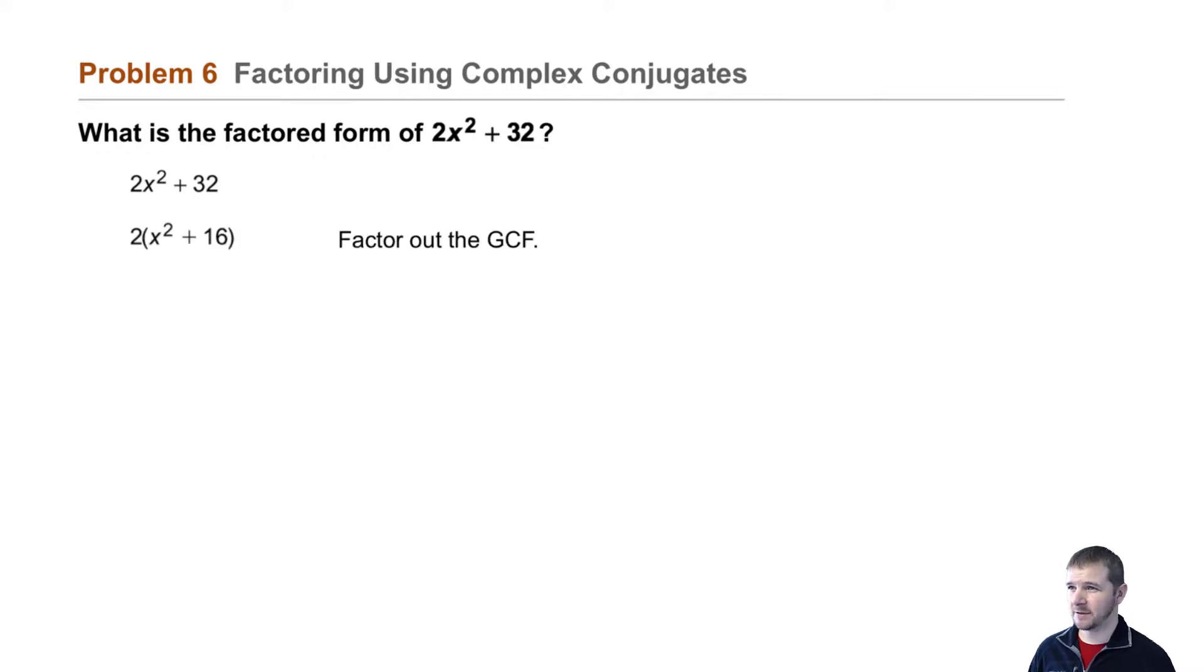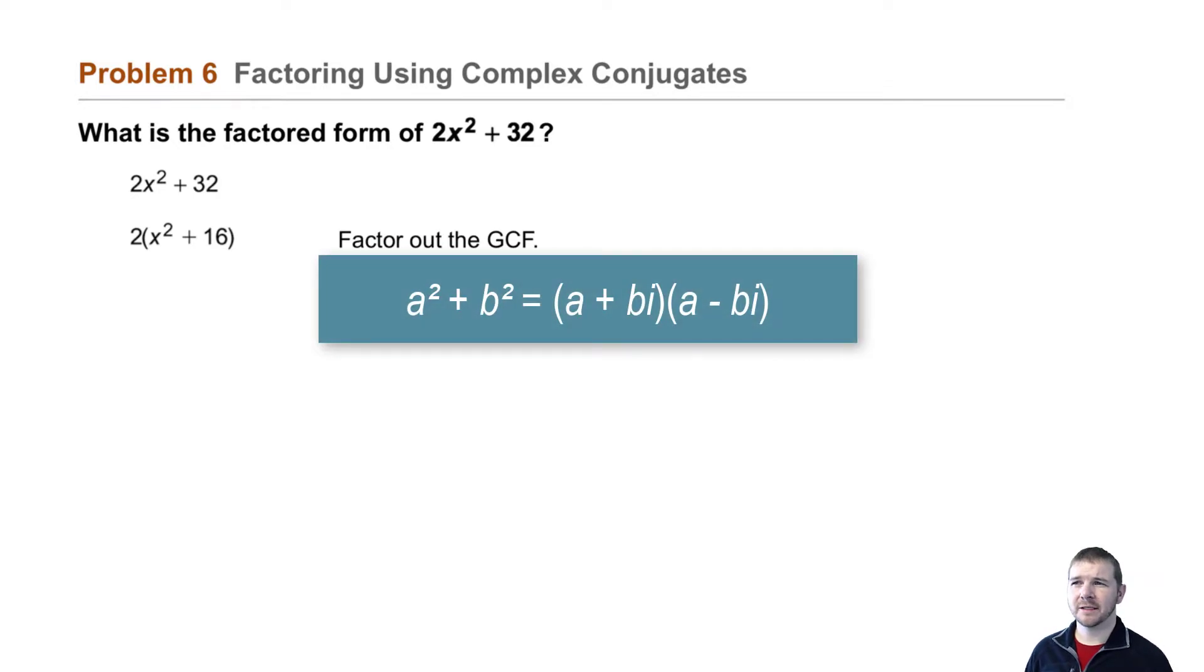But we can further factor x² + 16. We'll use the fact that a² + b² can be rewritten as the binomial (a + bi) times the binomial (a - bi) in order to factor our binomial x² + 16.